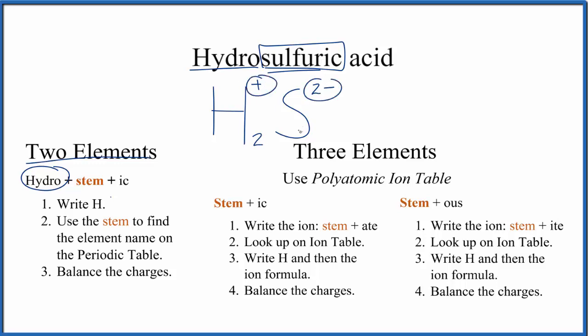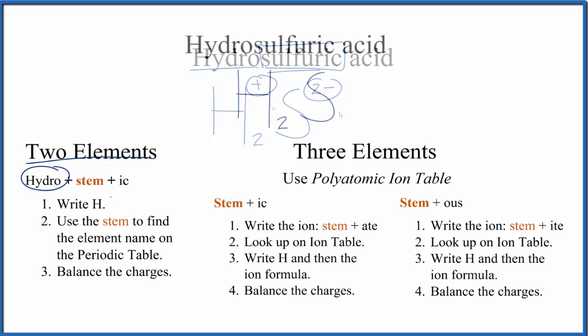to balance these charges out. That makes the formula for hydrosulfuric acid H2S. Probably a better name for H2S is hydrogen sulfide. This is normally a gas, and the IUPAC name, the official name, is hydrogen sulfide.